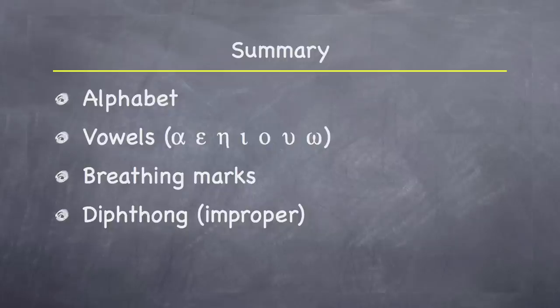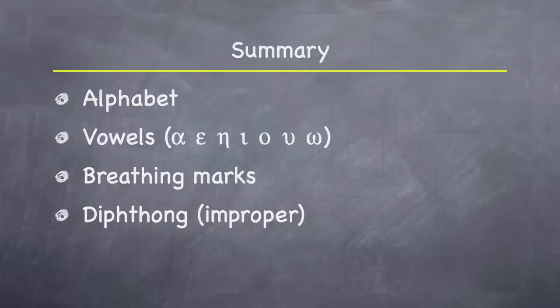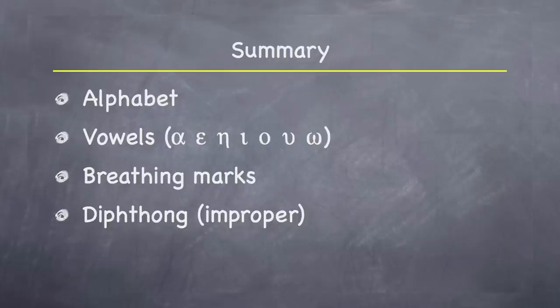We learned that words beginning with a vowel or rho will have a breathing mark. The smooth breathing is the backward C — it's not pronounced. The rough breathing looks like a C and introduces an H sound into the pronunciation of the word. If the word begins with rho or upsilon, the breathing will always be a rough breathing. Dieresis normally occurs on foreign loan words, proper names, and things like that — not always, but usually.